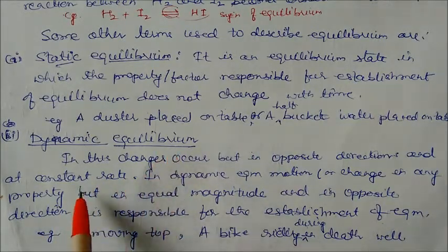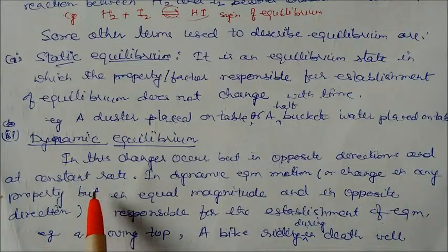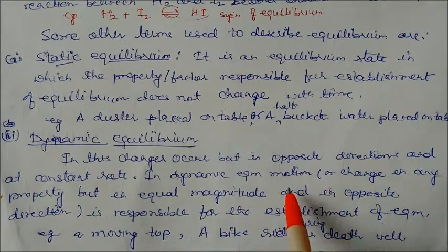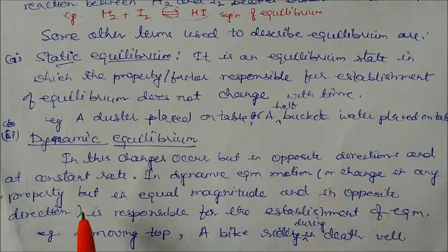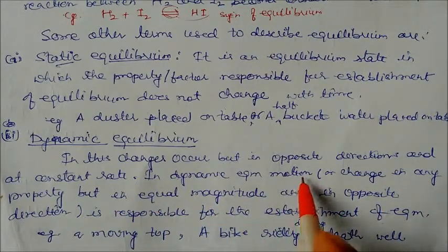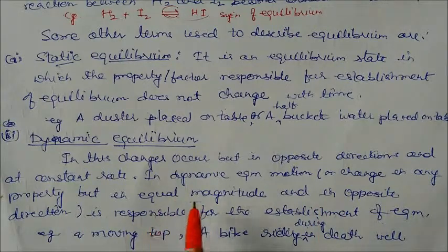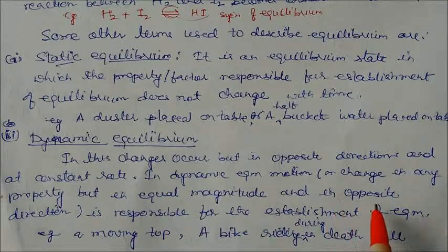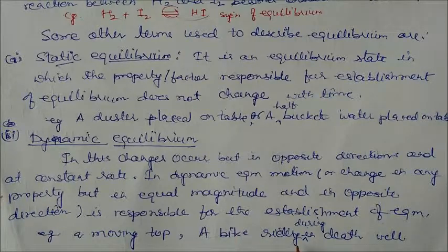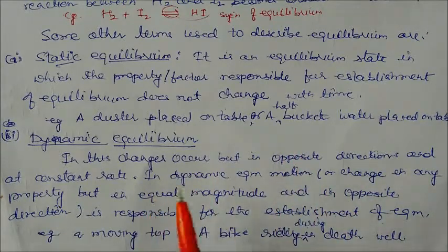Next is dynamic equilibrium. In this, changes occur but in opposite directions and at a constant rate. Motion is responsible for the establishment of equilibrium — the motions can be equal and opposite. In dynamic equilibrium, the magnitudes should always be equal but in opposite directions. Examples include a spinning top or a bike rider in a death-well maintaining equilibrium — that is actually dynamic equilibrium.